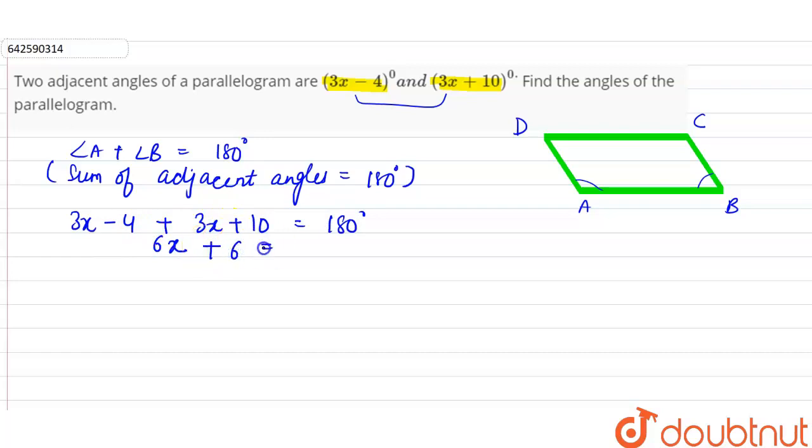So if we take 6 common, this is equal to 6(x + 1) = 180 degrees. So we can say x + 1 is equal to 180 divided by 6, which is equal to 30. So x will be equal to 30 minus 1, which is 29 degrees. So x is equal to 29 degrees.